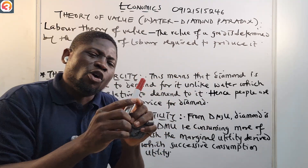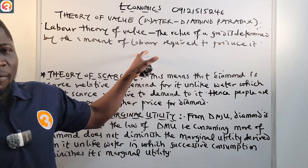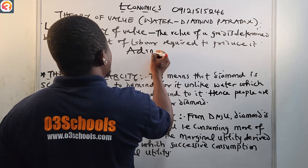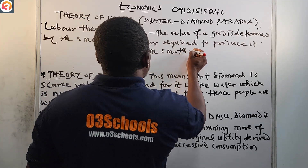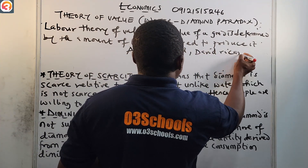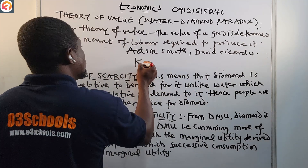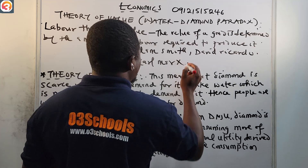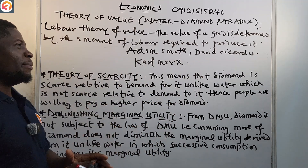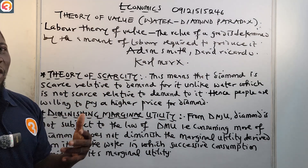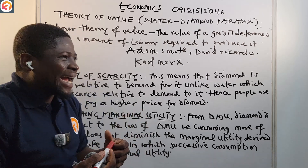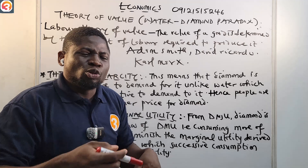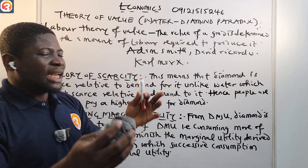This interpretation was put forward by Adam Smith, David Ricardo, and also Karl Marx. These were the people that put forward the labor theory of value, which says that the value of a good is determined by the amount of labor required to produce that material.